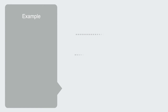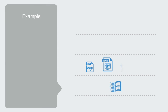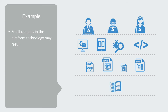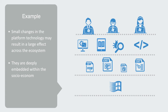When a new technology platform is adopted, like Microsoft's Windows operating system in the 90s, over time many new technologies are built on top of it and become dependent upon it. A whole ecosystem of new applications, programming languages, new firmware, hardware, vendors, instructors, and technicians develops, meaning that small changes in the platform technology may result in a large effect across the ecosystem. This is often the case for infrastructure systems like transportation networks and electrical power grids, which are deeply embedded within the socio-economic and technological fabric of society, with many deep interdependencies.